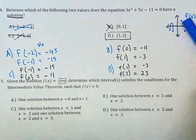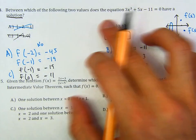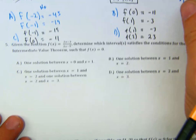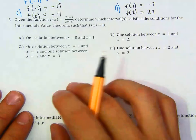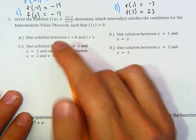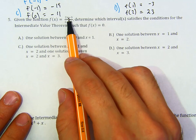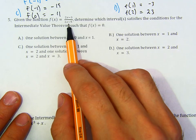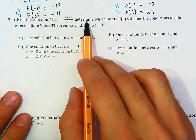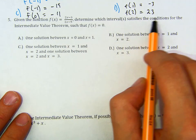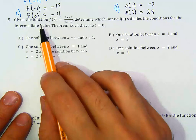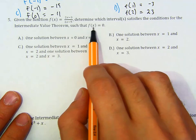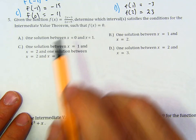Not too bad. Hopefully this is sinking in a little bit better. Let's look at question 5. Given the function f of x equals 2x minus 3 over 2x minus 5, determine which intervals satisfy the condition of the intermediate value theorem such that f of x equals 0.